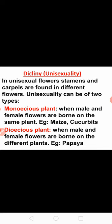If stamen is present, then that flower is called as staminate flower, meaning it is a male flower. Or if the carpels are present in the flower, then that flower is called as pistillate, meaning it is the female flower.